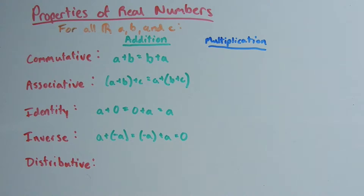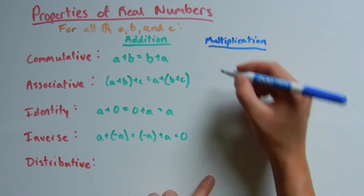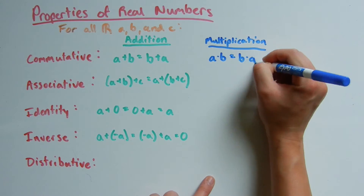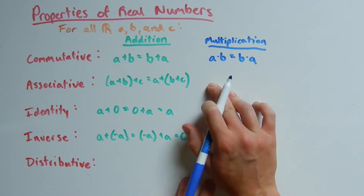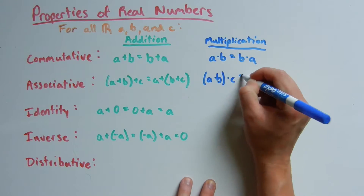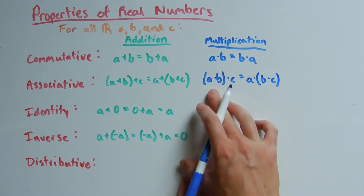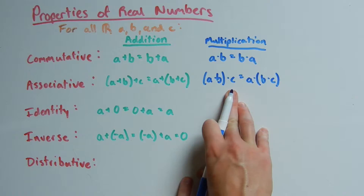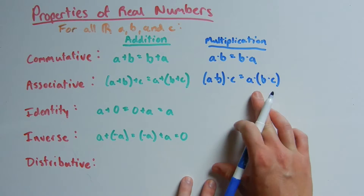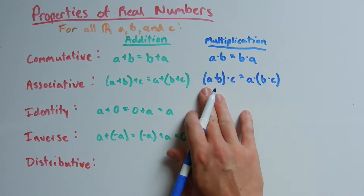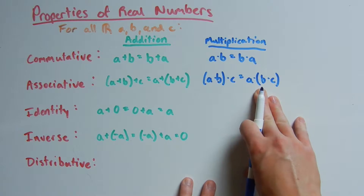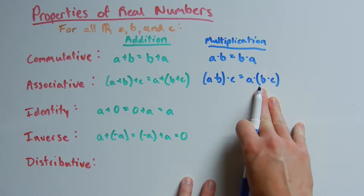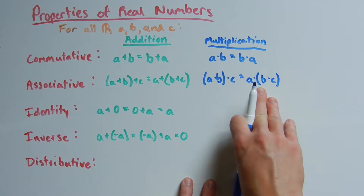For multiplication, the commutative property says a times b equals b times a. The associative property says (a times b) times c equals a times (b times c), where a and b are in parentheses on the left-hand side and b and c are in parentheses on the right-hand side of the equation.